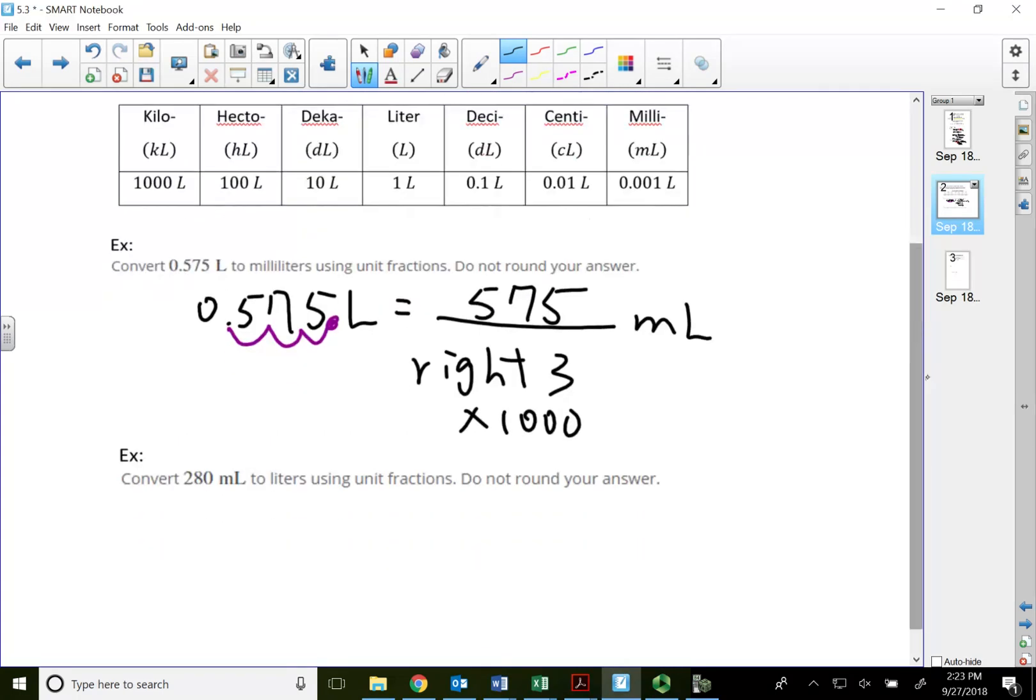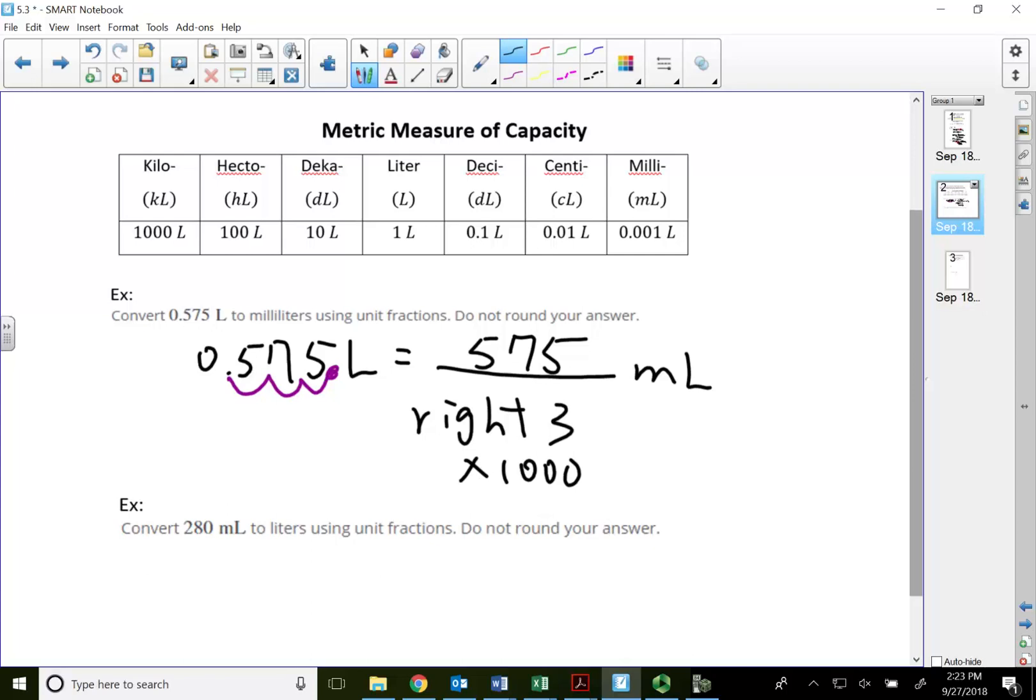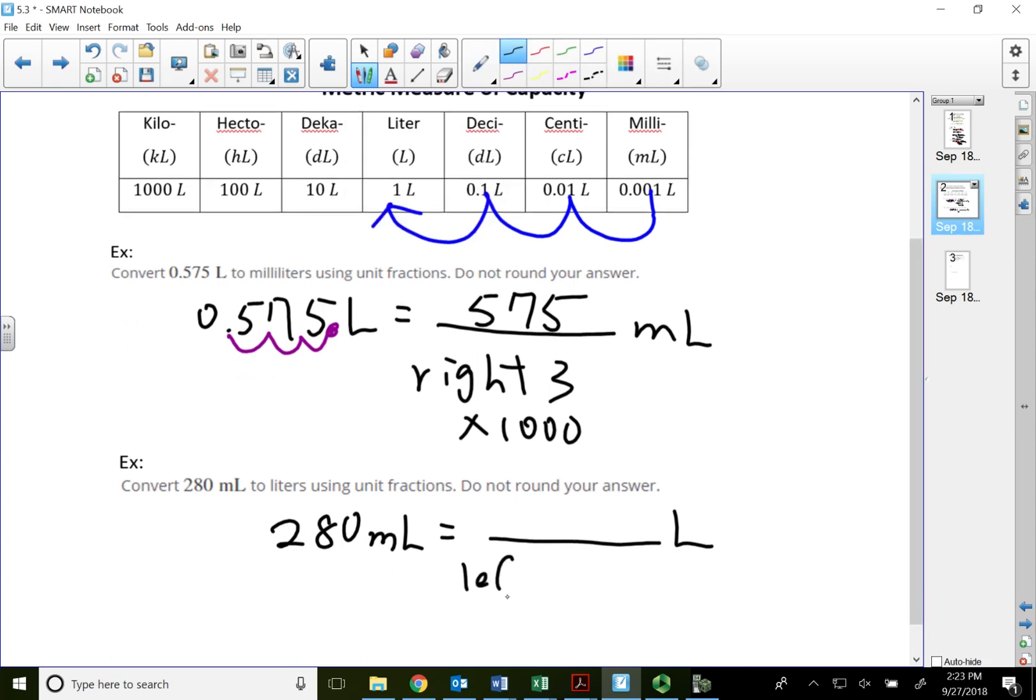So as long as we are converting within the metric system of length, capacity, or weight, we can simply move the decimal. This problem is 280 milliliters convert to liters. So this time, I'm starting at milli, need to go to liter, which is right in the center. So that will be three places to the left, which is the same thing as divided by 1000.